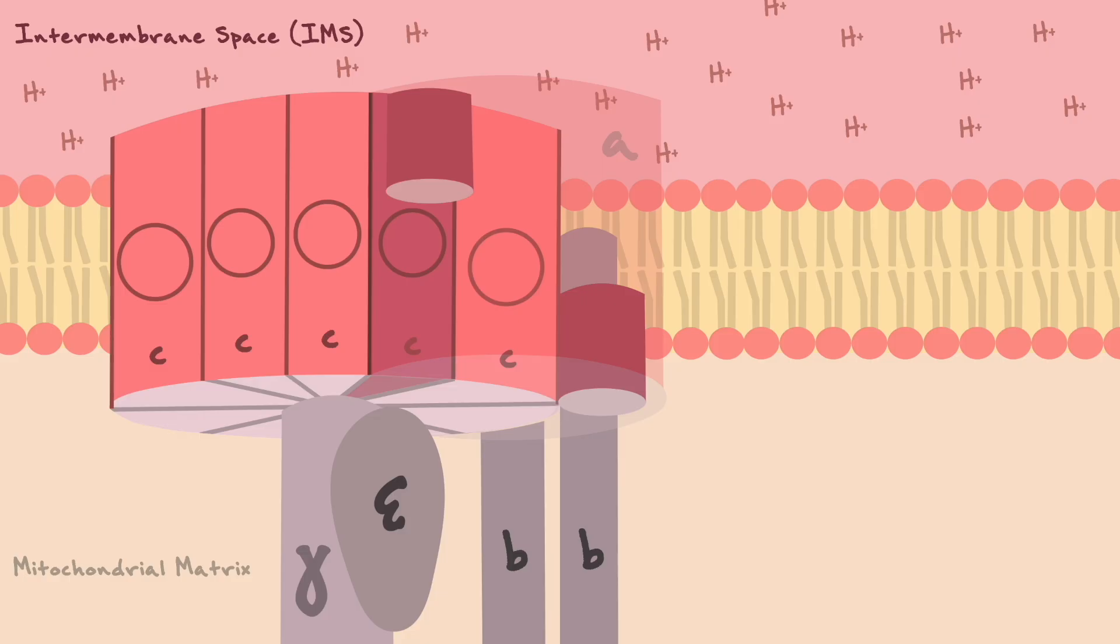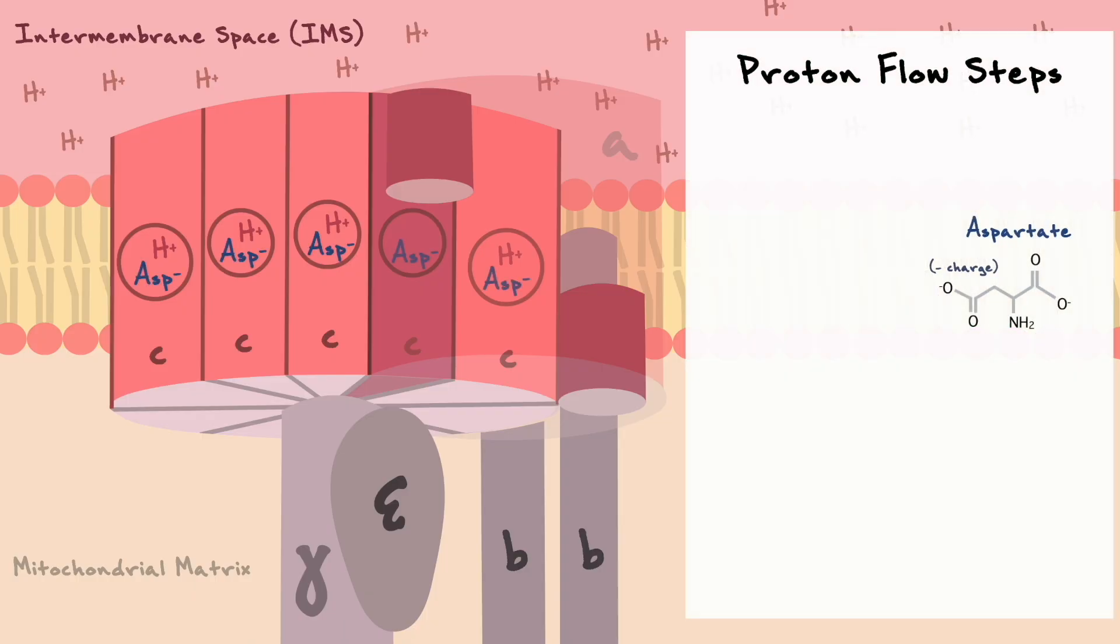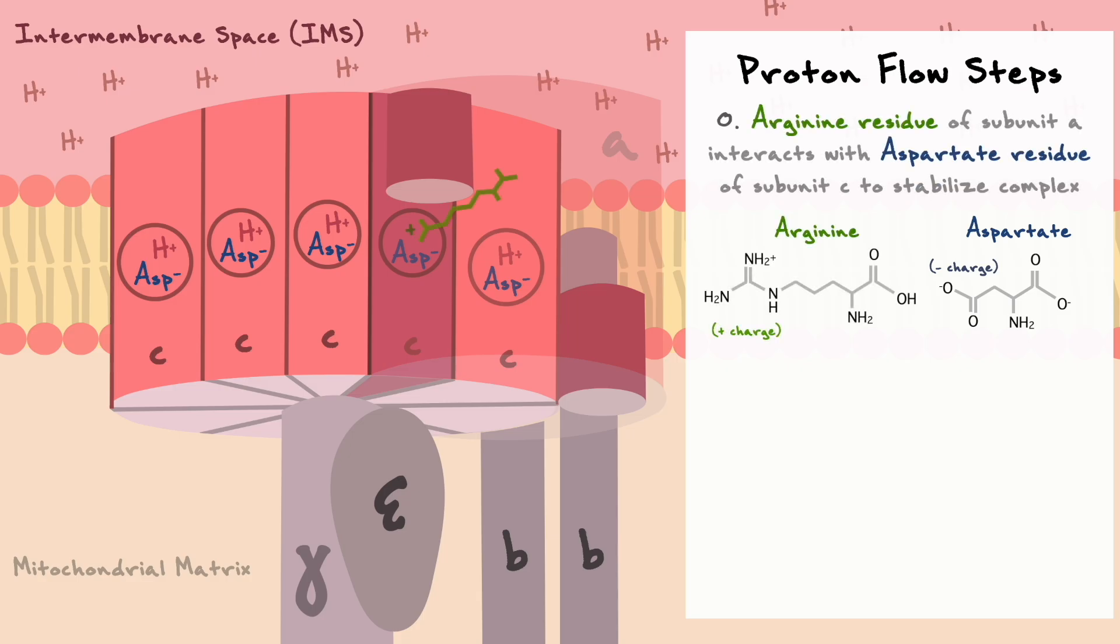Now to understand the proposed mechanism of proton flow, we need to discuss some components inside the A and C subunits that make this system possible. First of all, all but one C subunit houses a proton. Within each C subunit, the protons are stabilized by the negatively charged amino acid aspartate. The one subunit that has no proton, which in this figure is colored in a darker shade of red, is stabilized by a positively charged arginine residue that is part of the A subunit.